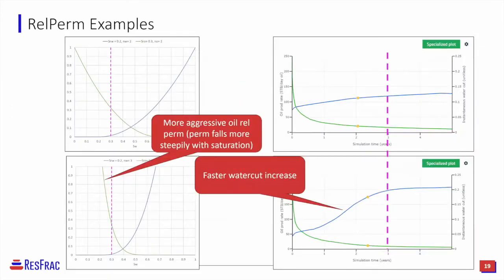Talking through some intuitions on curve shapes: with a steeper rel perm, the fractional flow of water or the relative permeability of oil over time is going to drop faster. That means the fractional flow of water increases faster over time compared to the base case with equal exponents on both oil and water phases. When I have the steeper oil rel perm, my water cut rises much faster.